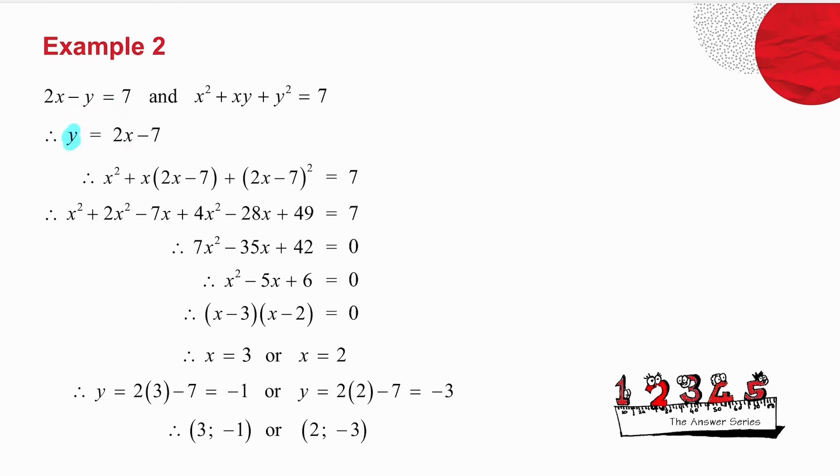Now, that y is the same as these y's. So in place of these two y's, I'm going to put 2x minus 7. And so I get that. Multiply the brackets out. Set up your quadratic.